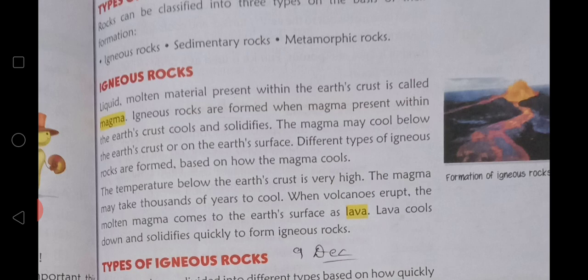The temperature below the earth's crust is very high. The magma may take thousands of years to cool. When magma is forced out, it comes to the earth's surface as lava.